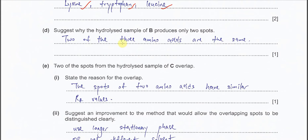Part D. Suggest why hydrolyzed sample of B produce two spots. Okay, because it just has two amino acids only. All right. So it means the three amino acids, it must have two same amino acids. Okay, two of the three amino acids, they are the same.